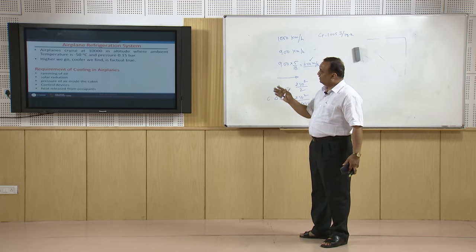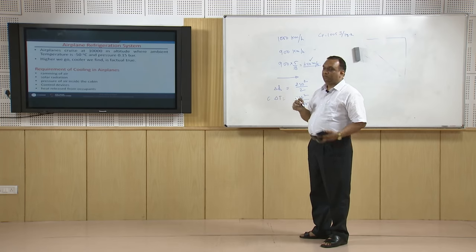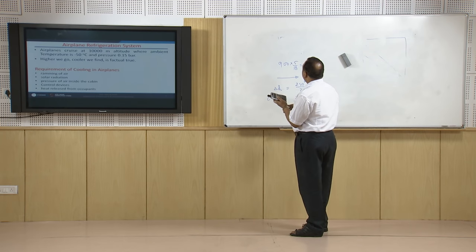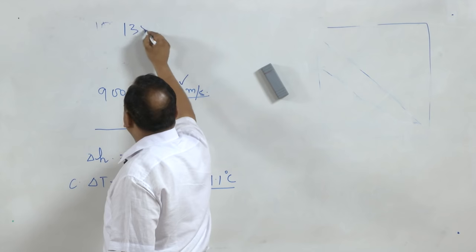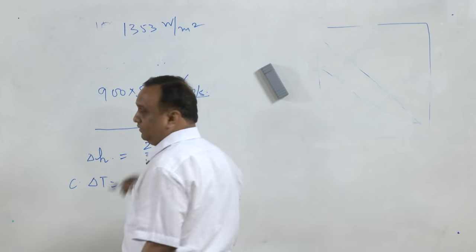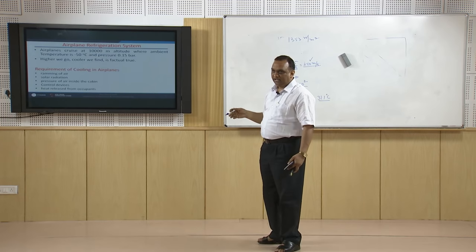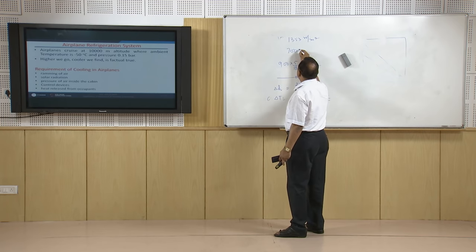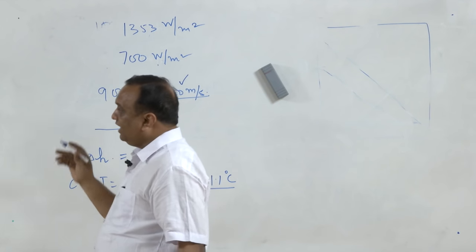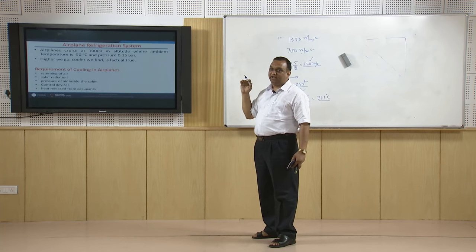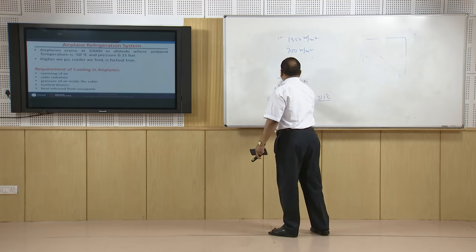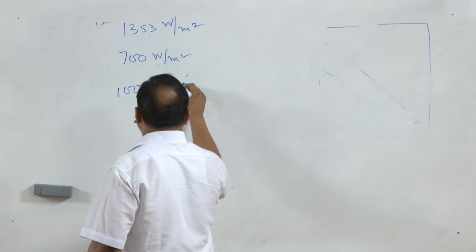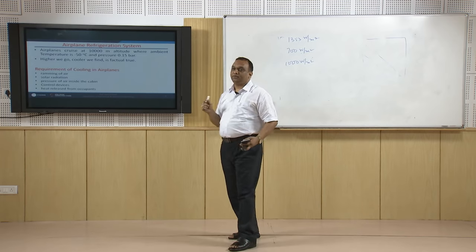In addition to that, there are solar radiations. Beyond the earth's atmosphere, solar radiation is estimated at 1353 watts per square meter. Even on the earth's surface, solar radiation is approximately 700 watts per square meter. In the area where the plane is cruising, we can assume radiation falling on the plane surface is approximately 1000 watts per square meter, or 1 kilowatt per square meter — this much heat is coming to the plane.